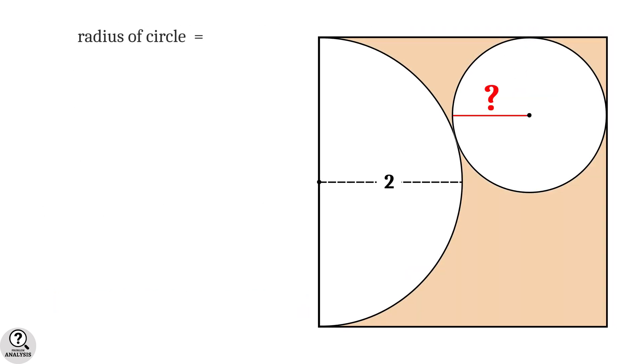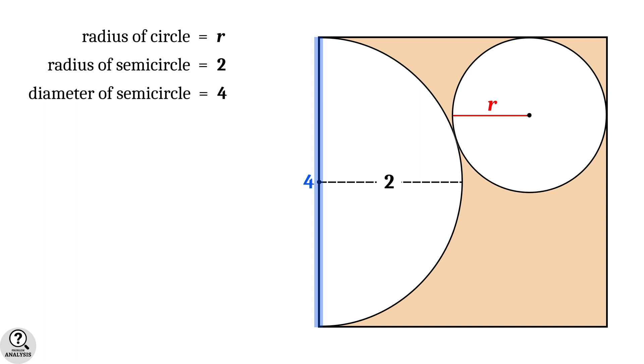Suppose the radius of the circle is r units. It is given that the radius of the semicircle is two units. Therefore, diameter of the semicircle will be equal to four units. And hence, the side length of the square will be four units.